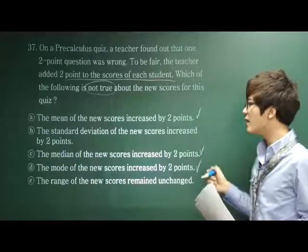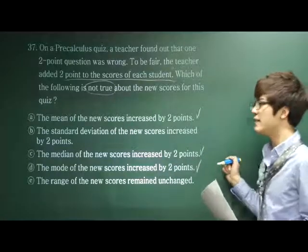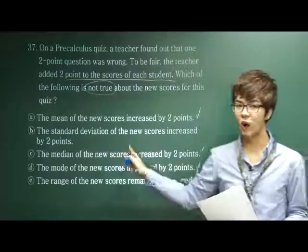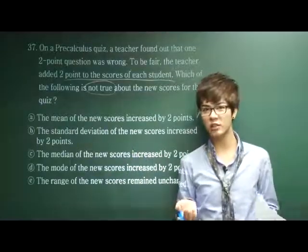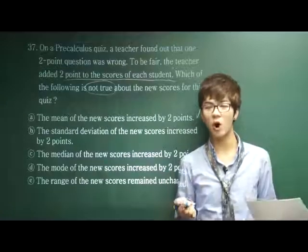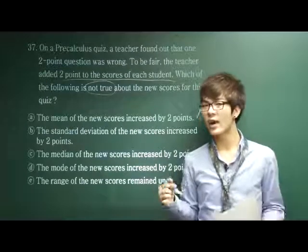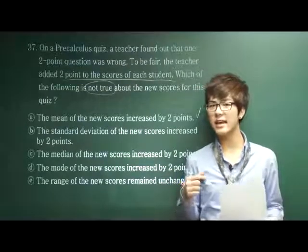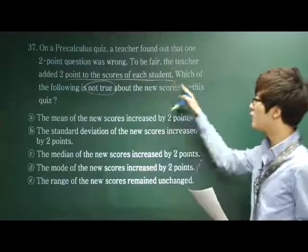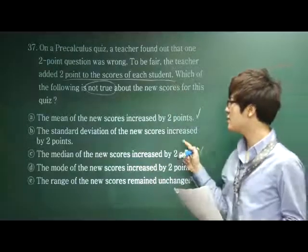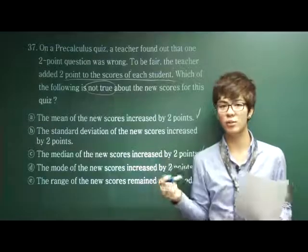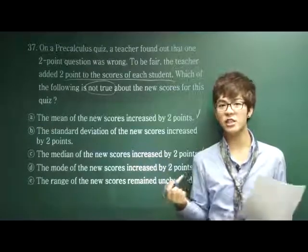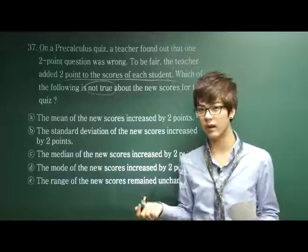What about B? The standard deviation of the new scores increased by two points. It is wrong. Why? Because what is standard deviation? It is the difference among the values. So even though the score has increased by two points, there is no difference among those values. Why? Because every and each one of the student's scores has increased by two points.